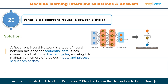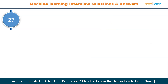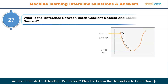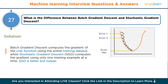Question number twenty-seven: what is the difference between batch gradient descent and stochastic gradient descent? Batch gradient descent computes the gradient of the cost function using the entire training dataset, while stochastic gradient descent (SGD) computes the gradient using only one training example at a time. SGD is faster but noisier.